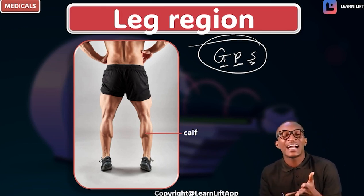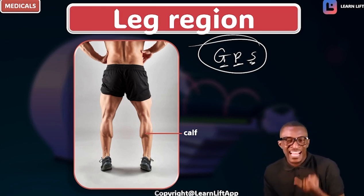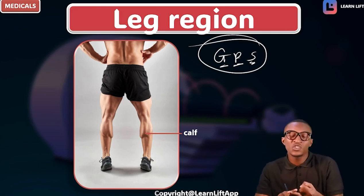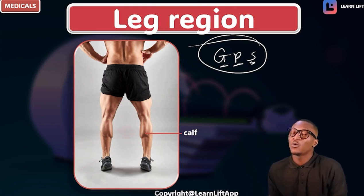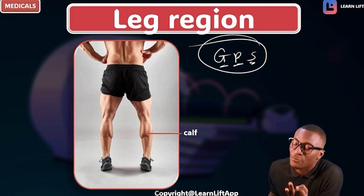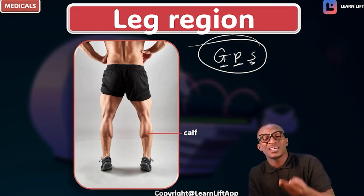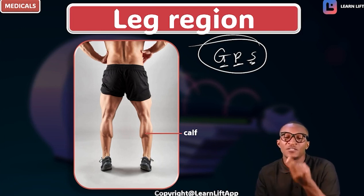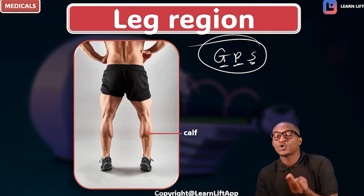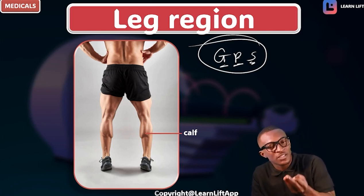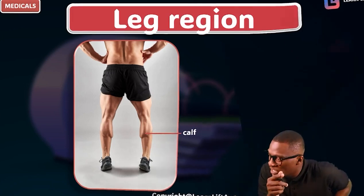The posterior aspect of the thigh is called the ham, or hamstring. The posterior aspect of the leg is called the calf. There is a depression at the posterior aspect of the knee — what is that depression called? It is called the popliteal fossa.